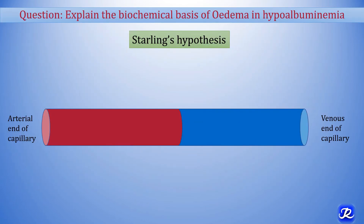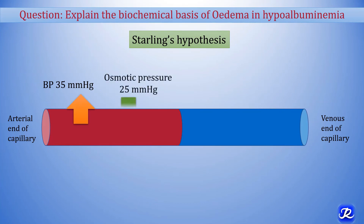Explain the biochemical basis of edema in hypoalbuminemia — less albumin in blood — which can be caused by excessive proteinuria. According to the Starling hypothesis, at the arterial end of capillary, blood pressure (hydrostatic pressure) of 35 mmHg expels water out of the capillaries. The effective osmotic pressure, contributed mainly by proteins — albumin forms 80% of proteins — is responsible for taking water back into the vascular compartment.